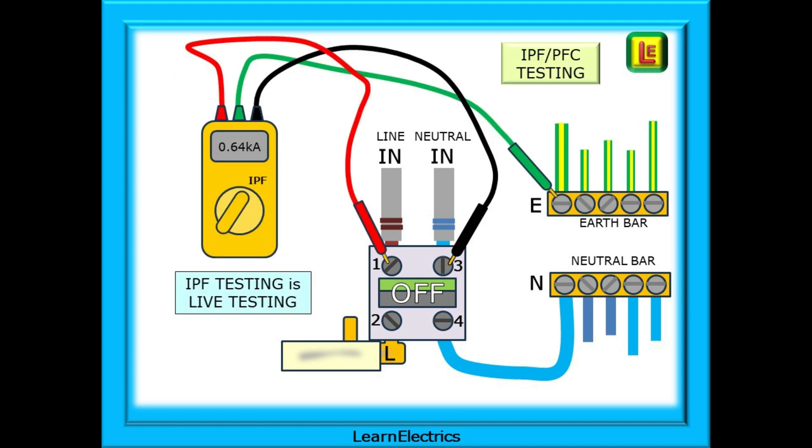To carry out the IPF test, set the meter to the correct range and test between the incoming line terminal and the earth bar. Shown here is a three-lead test, which includes a probe on the neutral bar. Some more modern meters will only require a two-lead test, the line and earth connections. Get to know your meter before assessment days.